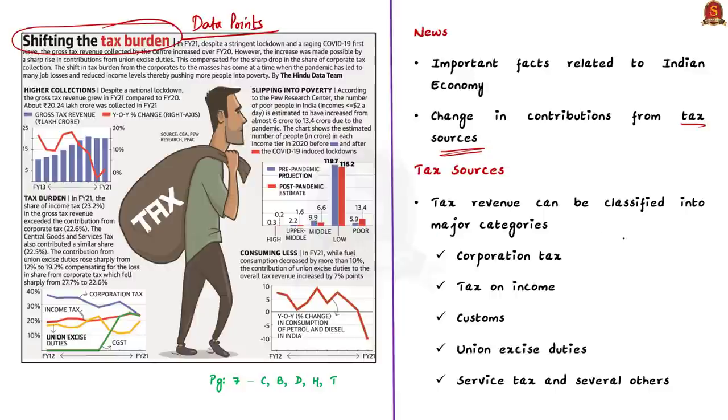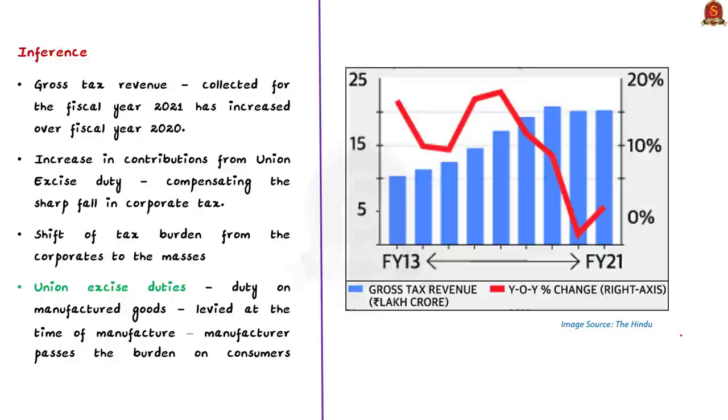With this information in mind, look at the graphs given for reference. As per the data, despite a severe lockdown and the impact of first wave of COVID-19, the gross tax revenue collected for the fiscal year 2021 has increased over fiscal year 2020. So, in spite of the severe lockdown, the gross tax revenue collected has increased. But an interesting fact is that the fiscal year 2021 recorded high contribution from union excise duty. This increase in union excise duty helped in compensating the shortfall in corporate tax. Because of the lockdown, there was a shortfall in corporate tax. This was compensated by the increase in union excise duty. This increase in union excise duty marks the shift of tax burden from corporates to the masses.